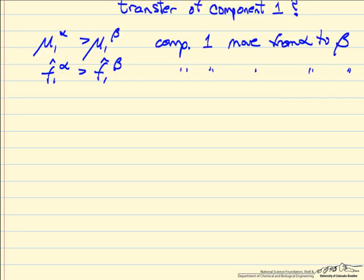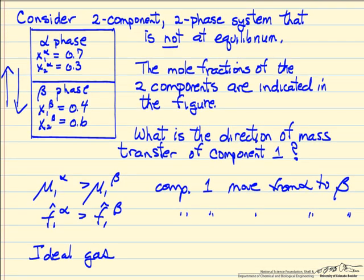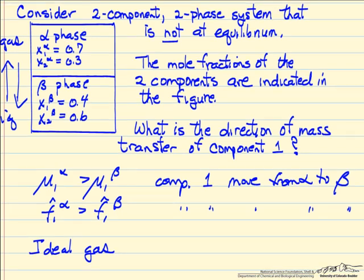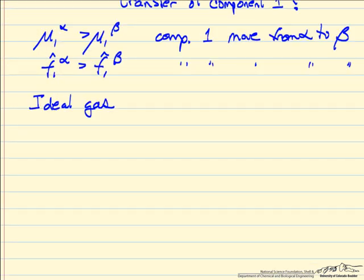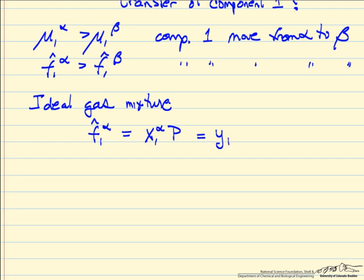The question then becomes: how do we determine the fugacity? For the case of an ideal gas, let's assume the alpha phase is a gas phase and the beta phase is a liquid phase, and we want to determine equilibrium between gas and liquid — a common situation when looking at separations. Assuming the gas phase is an ideal gas mixture, the fugacity of component one in the alpha phase equals the mole fraction of component one times the total pressure, or using standard notation: y times P, which is the partial pressure.